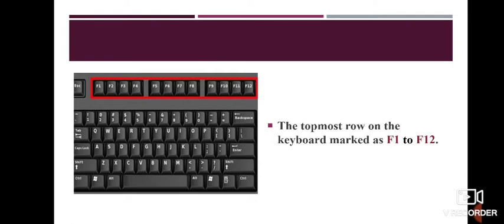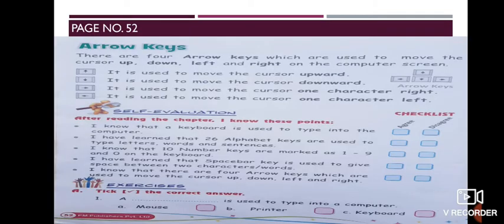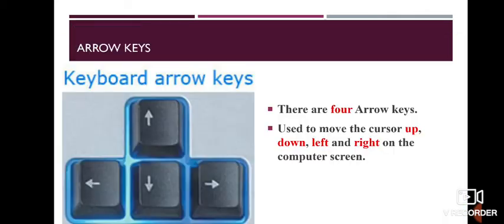Now let's move to our next page, page number 52 — Arrow Keys. There are 4 Arrow Keys. And they are used to move the cursor up, down, left, and right on the computer screen. 1 key is used to move the cursor up, 1 key to move it down, 1 to move it left, and 1 to move it right. Keys in red box are Arrow Keys.